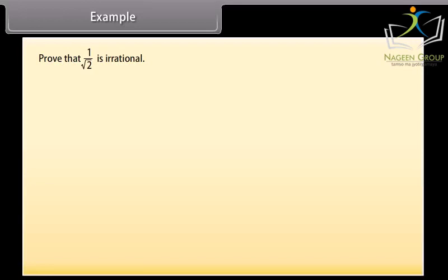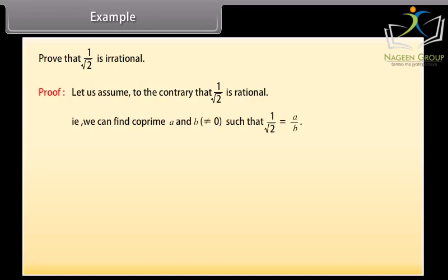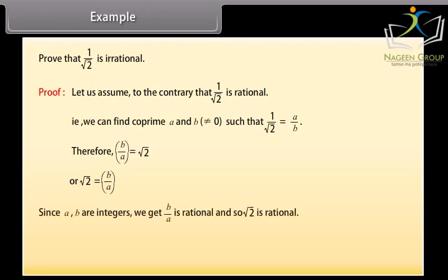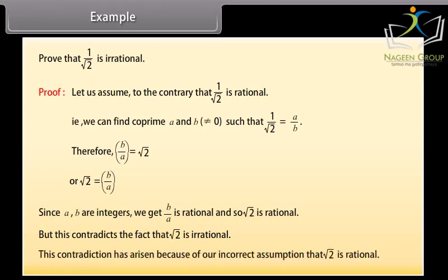Example: Prove that 1/√2 is irrational. Proof: Assume to the contrary that 1/√2 is rational — that is, we can find co-prime a and b, where b ≠ 0, such that 1/√2 = a/b. Therefore b/a = √2, or √2 = b/a. Since a and b are integers, b/a is rational, and so √2 would be rational. But this contradicts the fact that √2 is irrational. This contradiction has arisen because of our incorrect assumption that 1/√2 is rational.